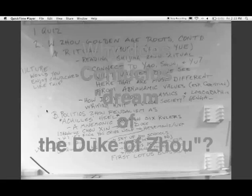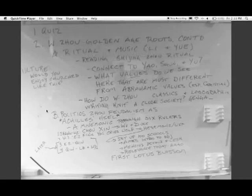We can see why Wen's important. We can see why Wu's important. Why is Wu's brother, the Duke, important? The Duke is important primarily because he is credited in traditional history with establishing ritual and music as the foundation of Zhou Chinese society.